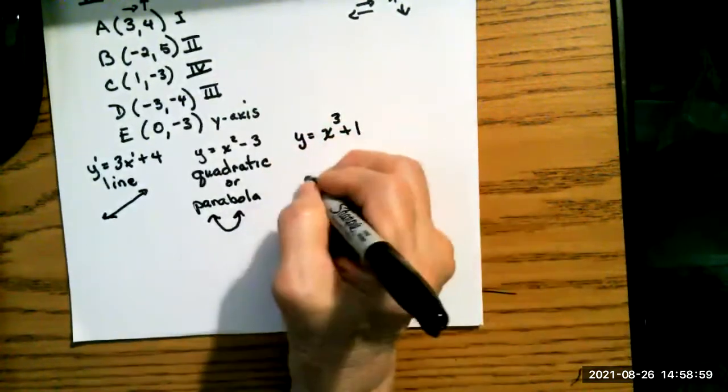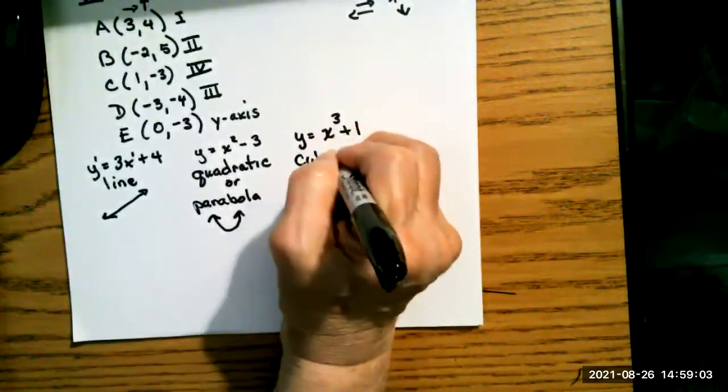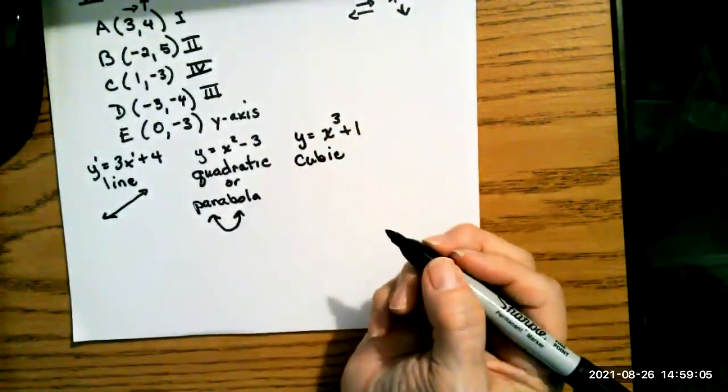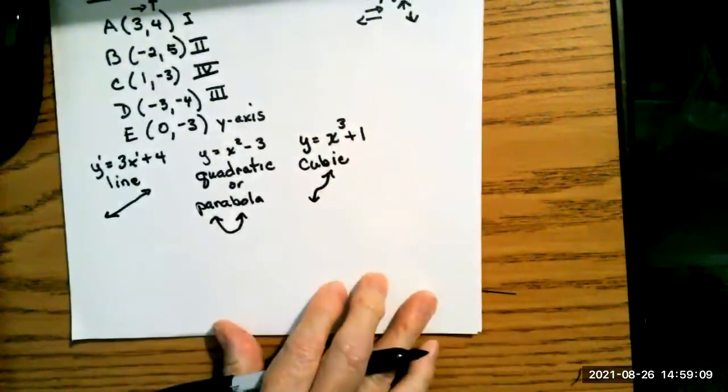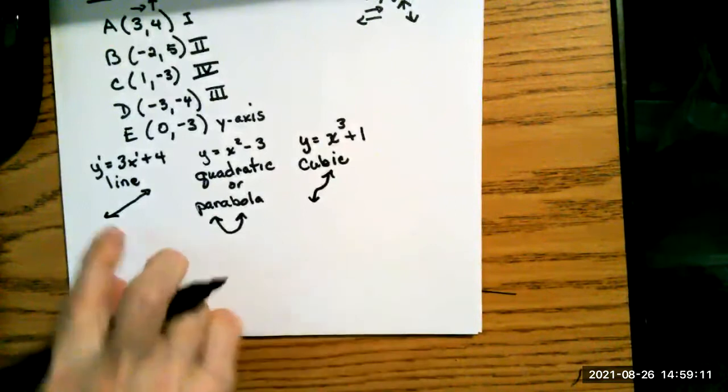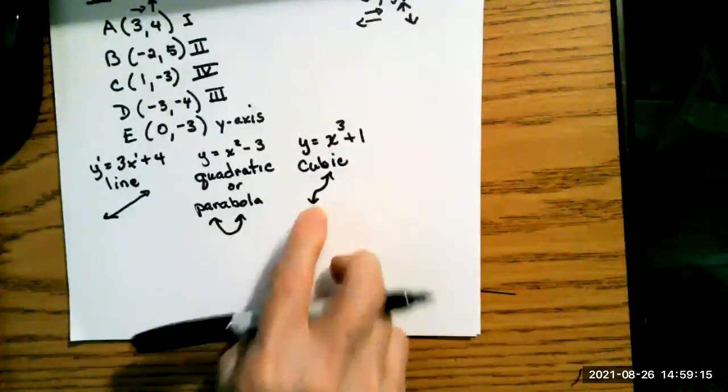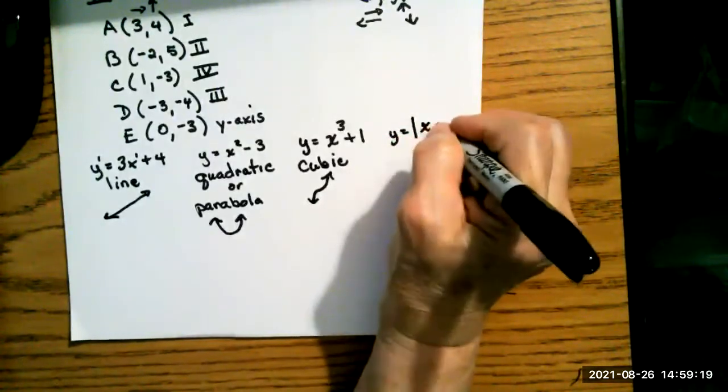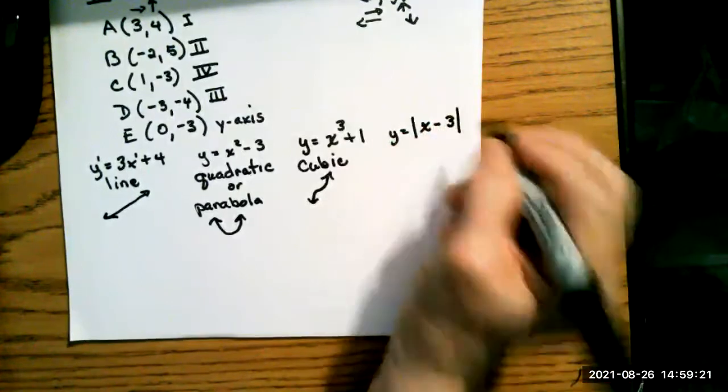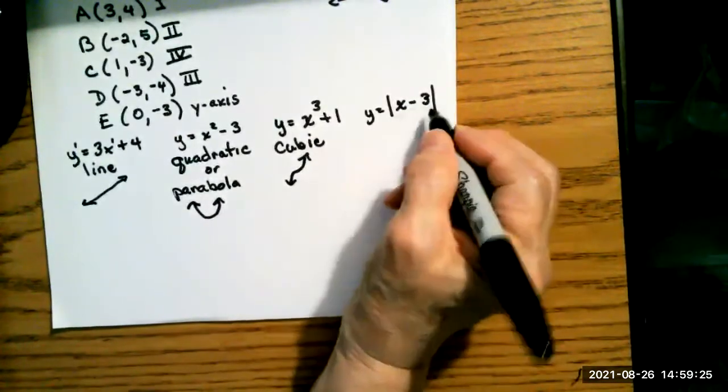x cubed plus one. This one is a cubic equation because of the three, and it takes the shape like this. Now, the reason it's important to know these little shapes is because these will appear as little tools on your MyLabs, and you will have to pick the correct tool before you can actually graph your problem.